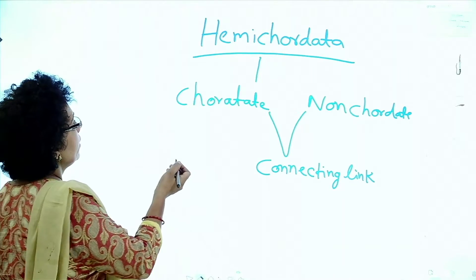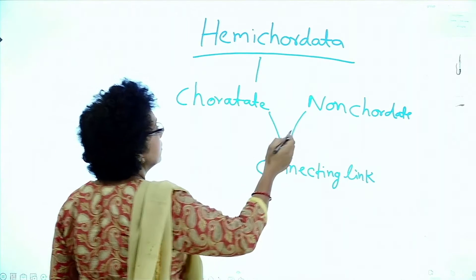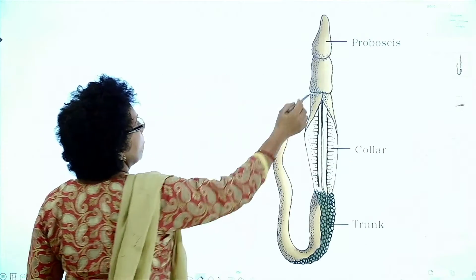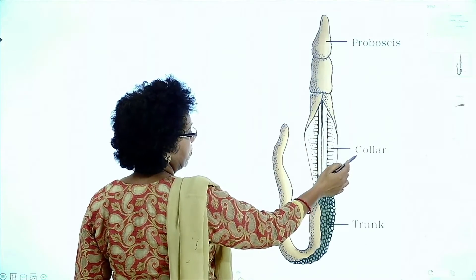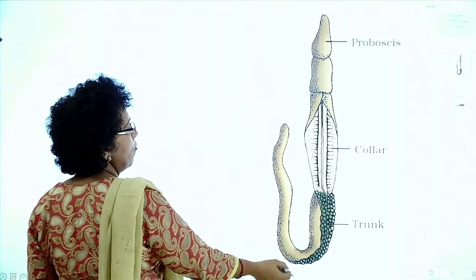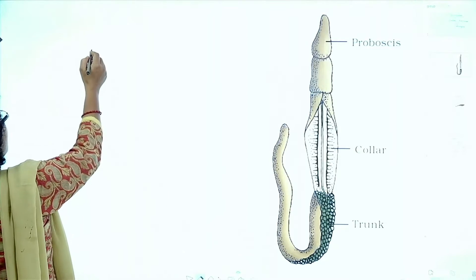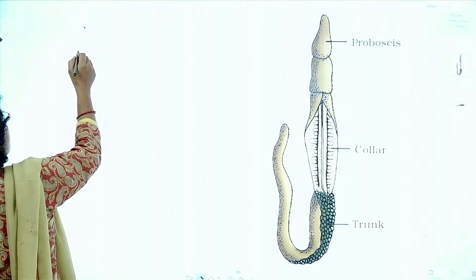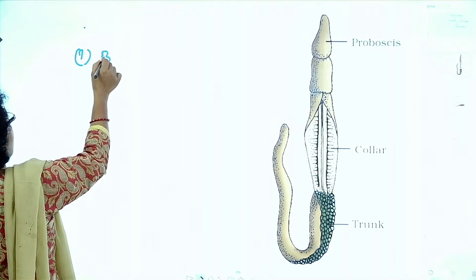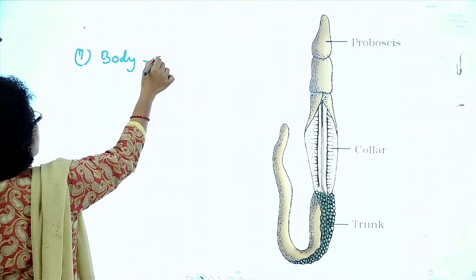The body of Hemichordata is divided into three parts: one is proboscis, second is collar, and third is trunk. That is the diagram of Balanoglossus. One main feature is the body is worm-like.